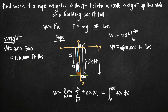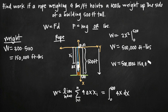The work done on the rope is 500,000 foot-pounds, and the work done on the weight is 150,000 foot-pounds. Adding them together gives a total work of 650,000 foot-pounds. That is the total work done to hoist the rope and the weight up to the top of the 500-foot building.